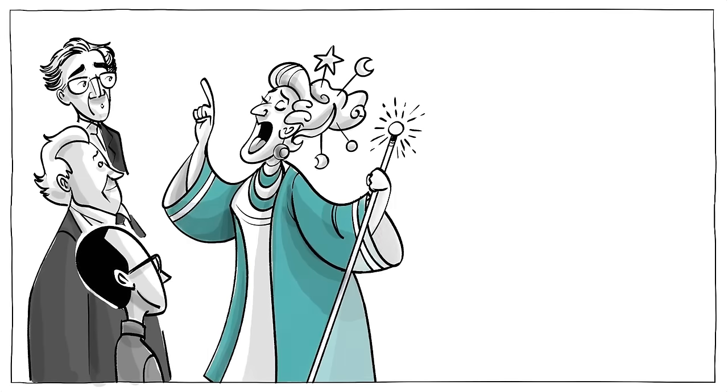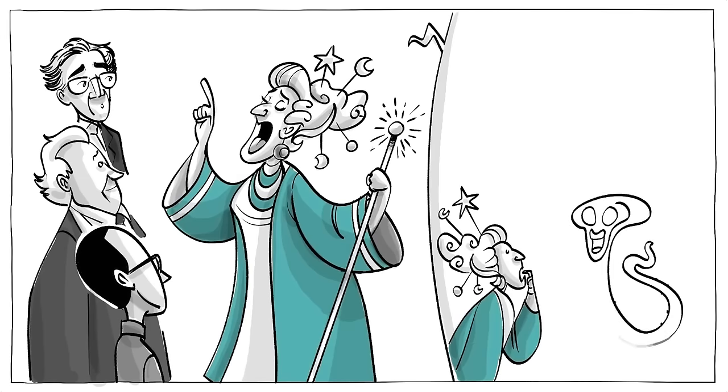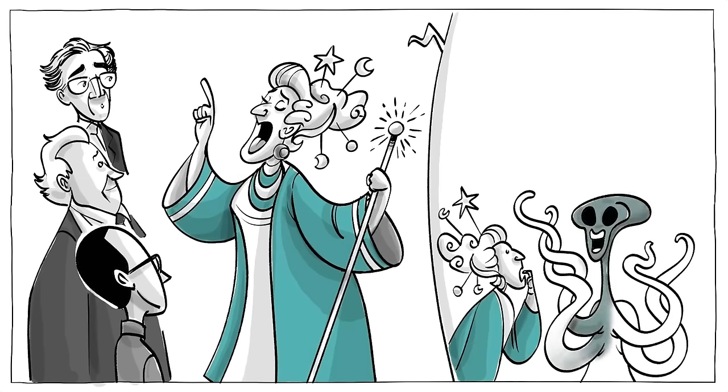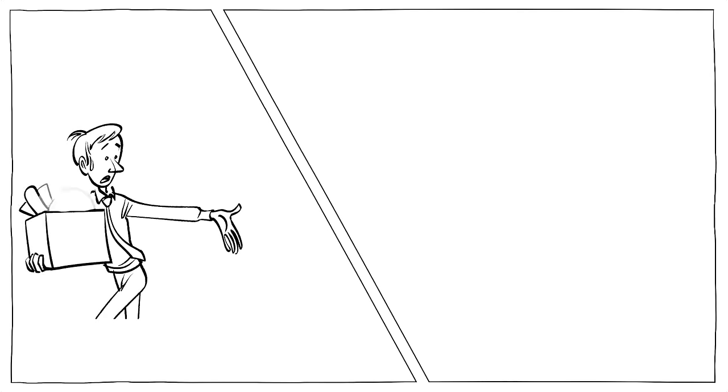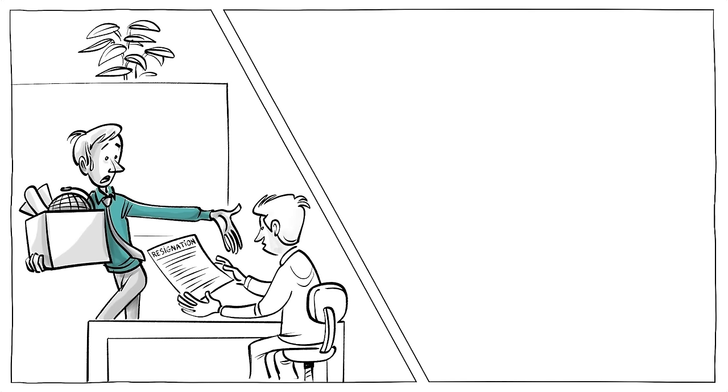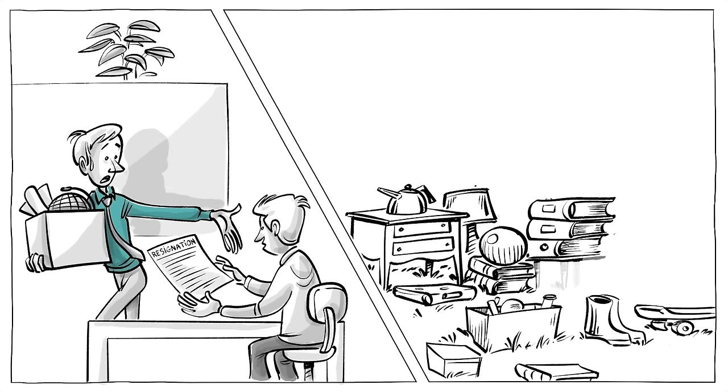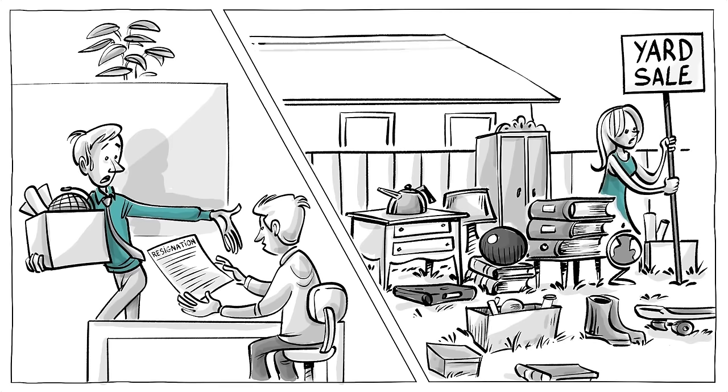Martin claimed to receive messages from superior beings from another planet called Clarion. The messages purportedly said that a flood would destroy the world on December 21st, 1954. The psychologists observed that many members quit their jobs and let go of their possessions in preparation for the end of the world.